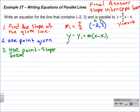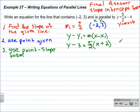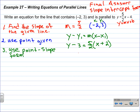Our equation is going to be y minus 3 equals 5/2 times the quantity x minus negative 2, which we can write as x plus 2. So there we have the equation in point-slope form. We want to put it into slope-intercept form, y is equal to mx plus b. We need to get the minus 3 over to the right side by adding 3 to each side.